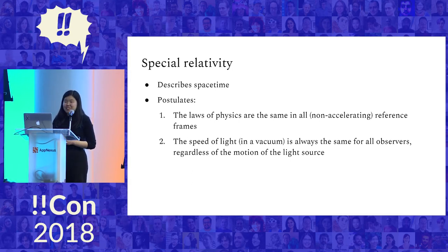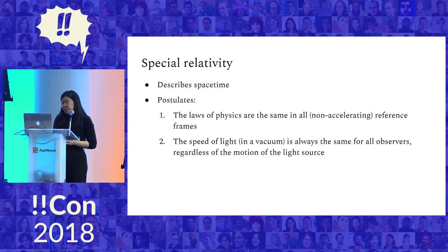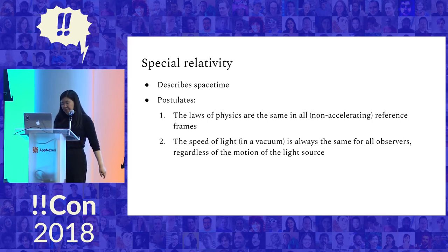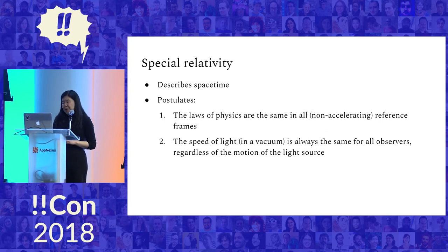The second postulate says that the speed of light in a vacuum is always the same for all observers, regardless of the motion of the light source. This seems pretty innocuous, but this is the thing that's going to lead to some non-classical and possibly counterintuitive consequences for how different observers experience space and time.